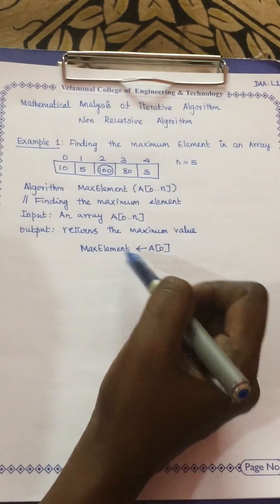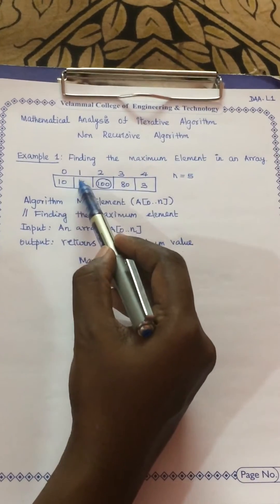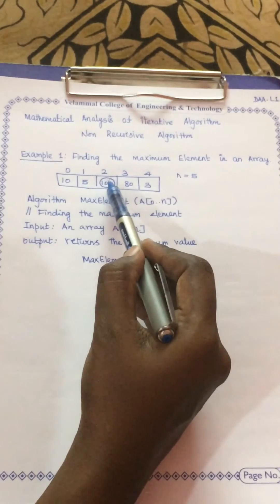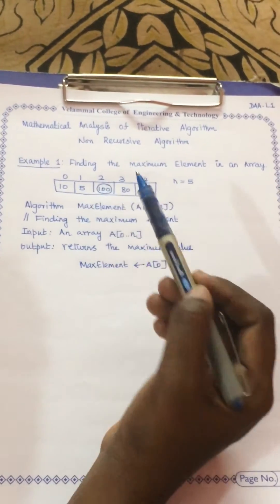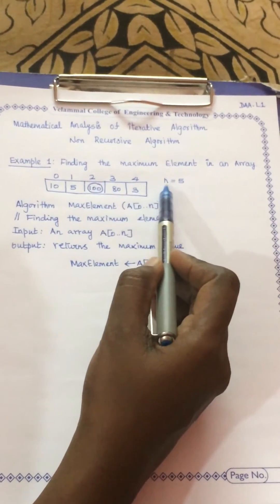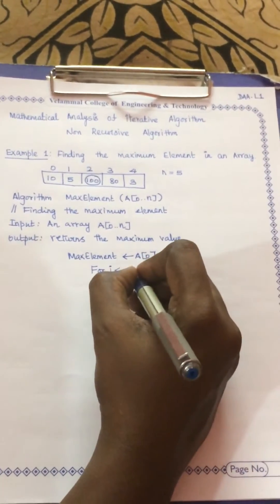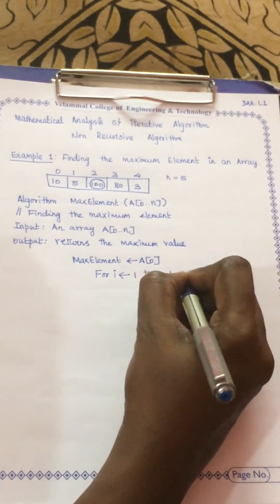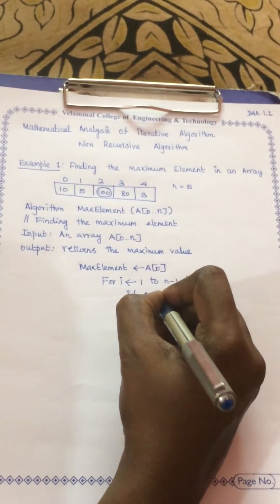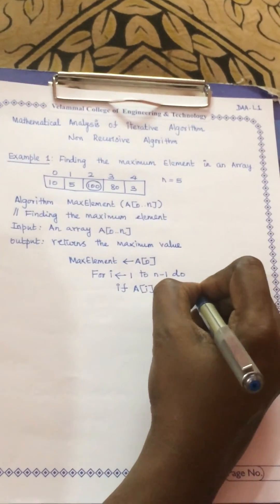What we do next is take the value 10 — stored as the maximum element — and compare it with the remaining elements of the array until we reach index 4. Whenever an element greater than 10 is found, we replace the maximum element with that value. The iteration repeats for the maximum number of elements, using a for loop where the index i starts from 1 and goes up to n minus 1. In each iteration, we check if a[i] is greater than the current maximum element.